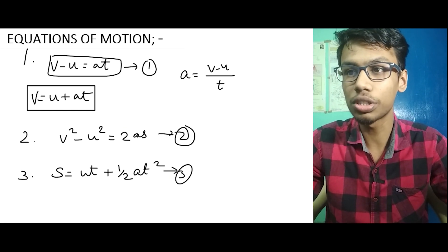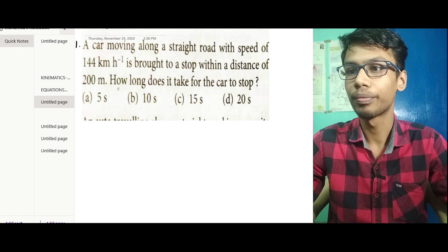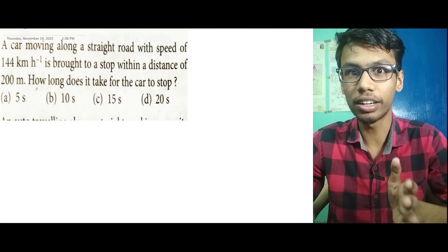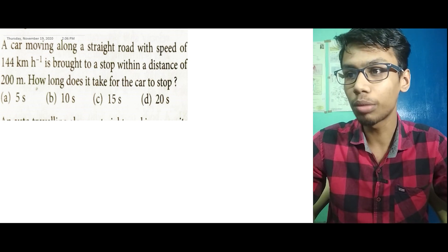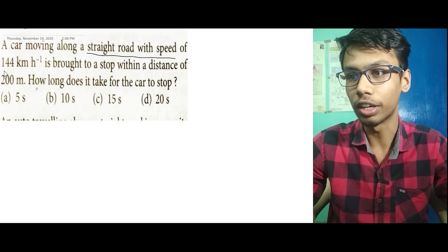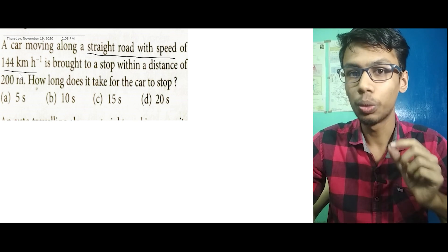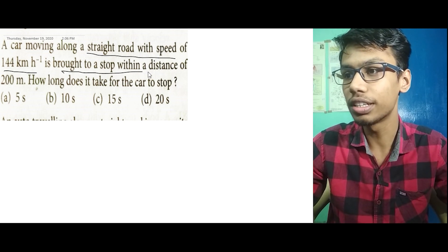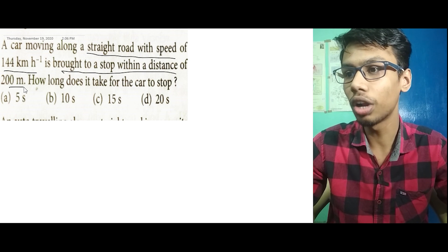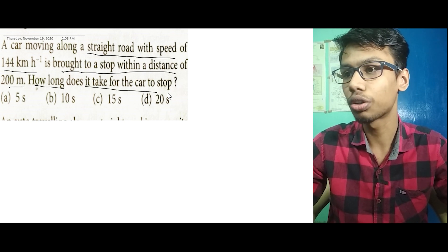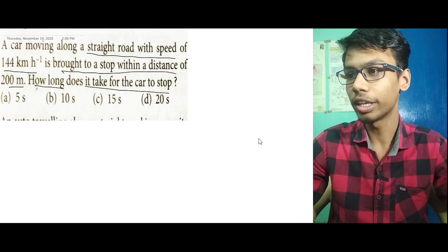Let's look at the first question. A car moving along a straight road with a speed of 144 km per hour is brought to a stop within a distance of 200 meters. How long does it take for the car to stop?